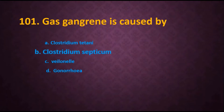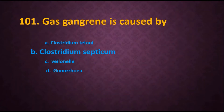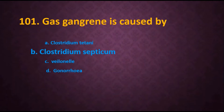The answer is Clostridium septicum. Gas gangrene is also caused by Clostridium perfringens — if that option is given, it is also correct. Clostridium septicum is a rare organism known to cause traumatic myonecrosis, mainly associated with colonic malignancy or immunosuppression. Veillonella is a gram-negative cocci and acts as normal flora of the mouth and gastrointestinal tract.